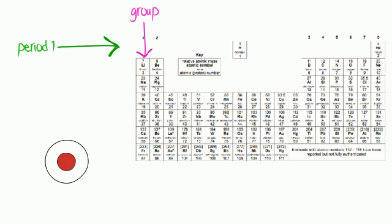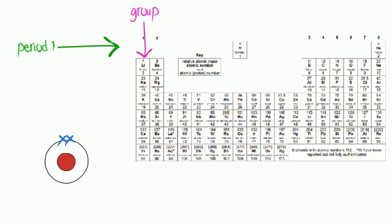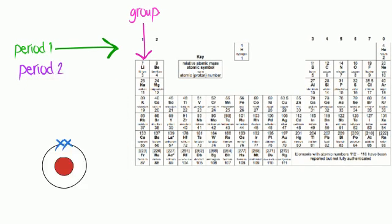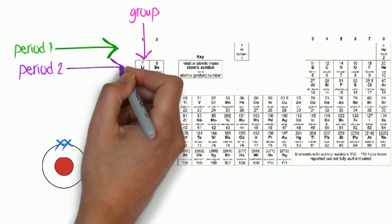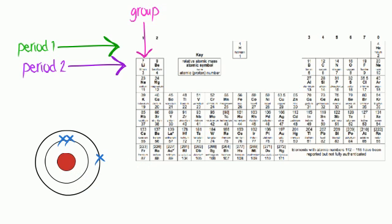In period 1, we have hydrogen, which has one electron in the first energy level. Helium has two electrons, so that first energy level, or shell, is now full. So now we move on to period 2. Lithium is in group 1, and has 3 electrons: 2 in the first energy level, and 1 in the outer shell.